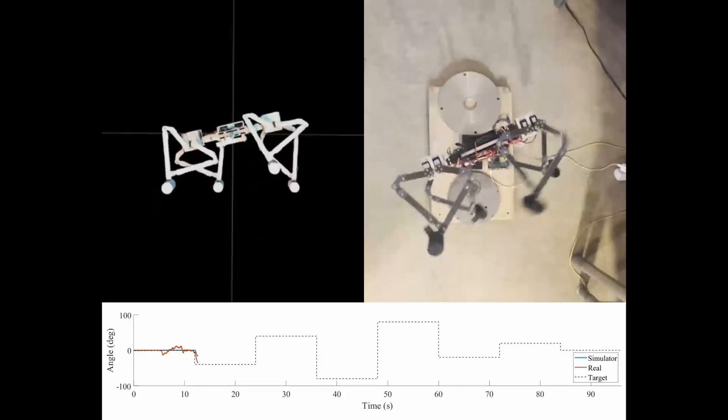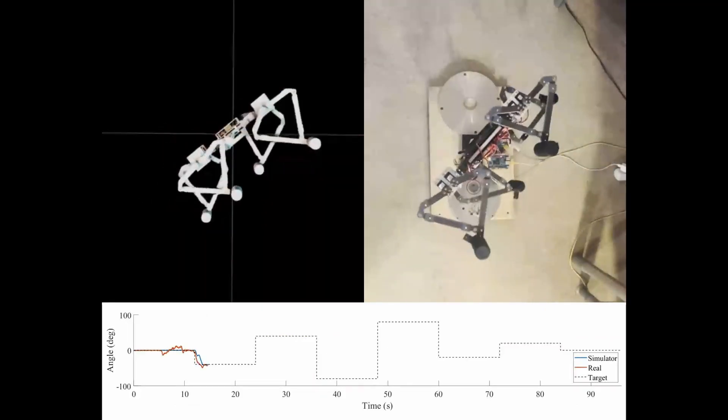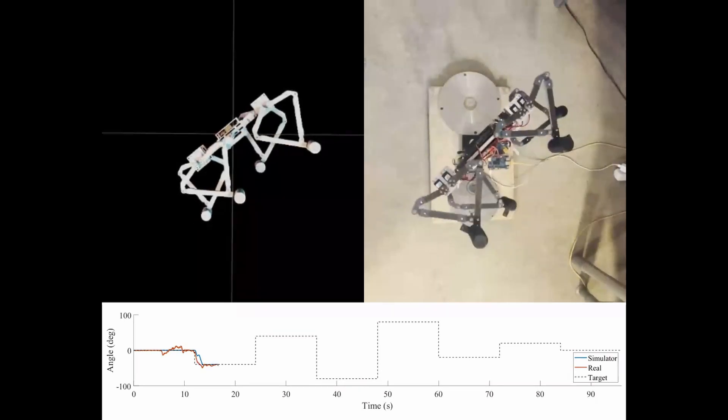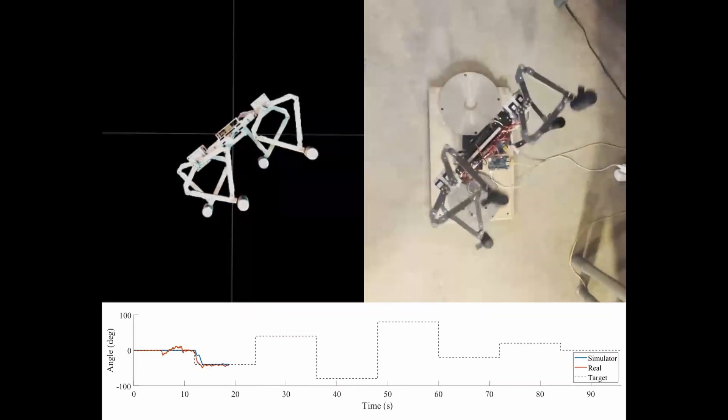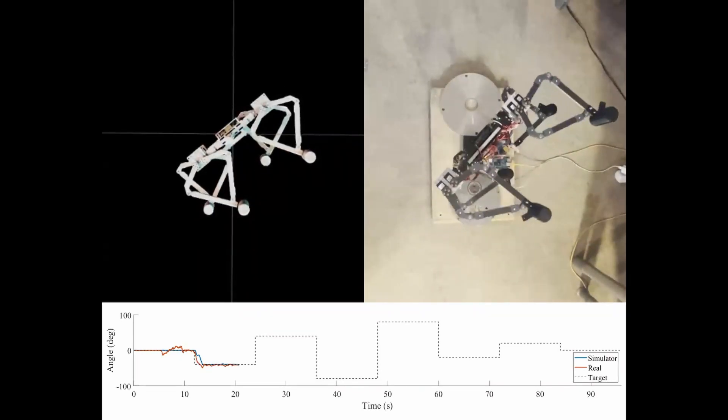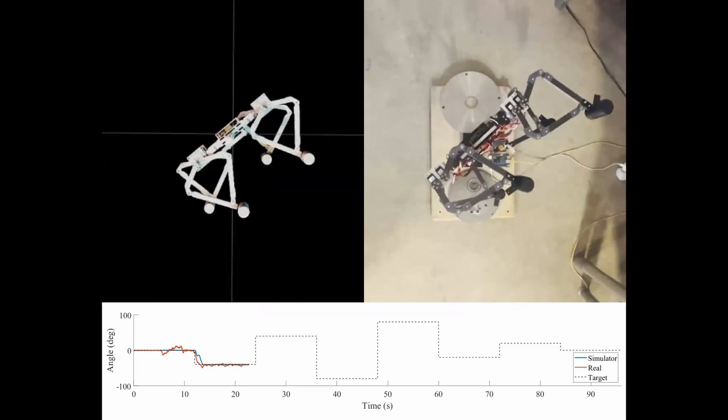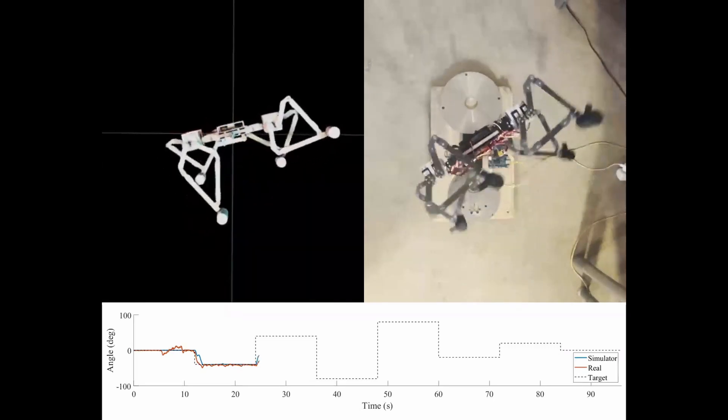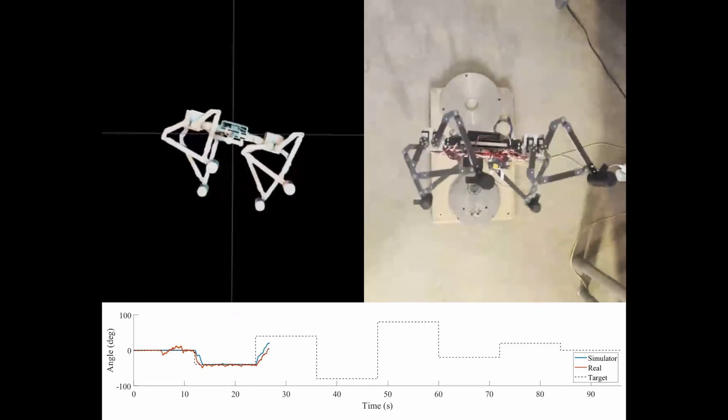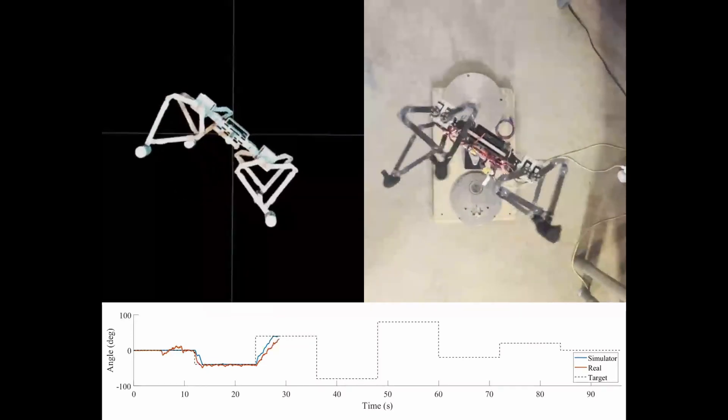The video you are currently seeing shows a comparison between the real system mounted on the rotating pole and a simulation model when given a step sequence of attitude commands in the pitch configuration. As you can see the real system responds similarly to the simulation and demonstrates robust sim-to-real transfer of the learned policy.